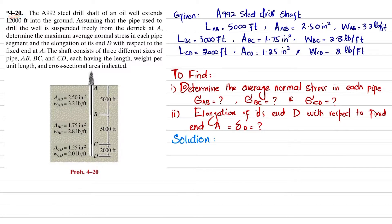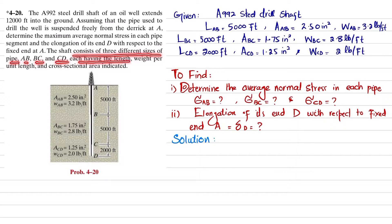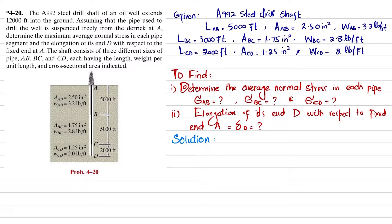Welcome back. Problem 4-20: An A992 steel pipe shaft of an oil well extends 12,000 feet into the ground. Assuming the pipe used to drill the well is suspended freely from the derrick, determine the maximum average normal stress in each pipe segment and elongation of point D with respect to the fixed end A. The shaft consists of three different pipe sizes: AB, BC, and CD, each having a specified length, weight per unit length, and cross-sectional area.